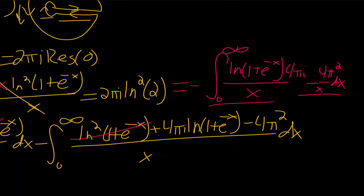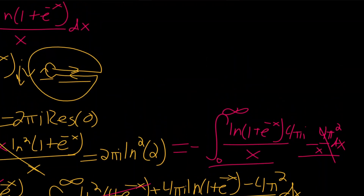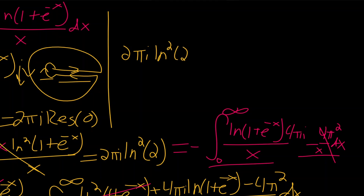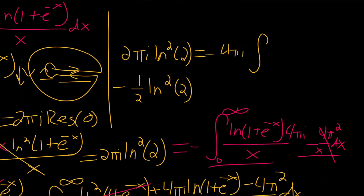Taking the imaginary parts of both sides, the real term drops out. So we get 2πi times the residue at 0, which is the natural log squared of 2, equal to minus 4πi times the integral. Dividing both sides by minus 4πi, what we end up with is negative one-half times the natural log squared of 2. And that is the value of our integral: negative one-half times the natural log squared of 2.